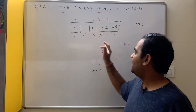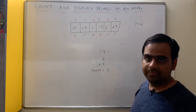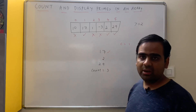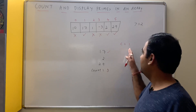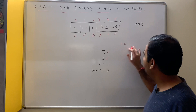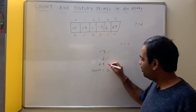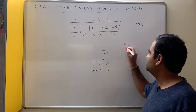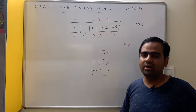Is 17 a prime? Yes. We display 17 and we increment count. Is 1 a prime? No. We do not display it, neither do we increment count. Is minus 3 a prime? No. Neither we display it nor we increment the count. Is 2 a prime? Yes. We display 2 and we increment the count. Is 29 a prime? Yes. We display 29 and increment the count. At last you print the value of count, which says the number of prime numbers in this array are 3.